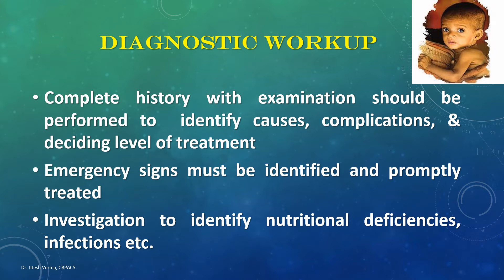Diagnostic workup should include a complete history and examination to identify various causes of acute malnutrition, complications such as dyselectrolemia, and the appropriate level of treatment — community-based or facility-based. Emergency signs must be identified first, as children with emergency signs require facility-based treatment.